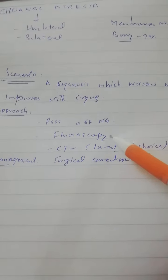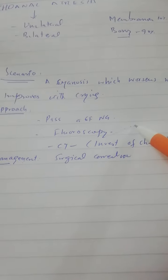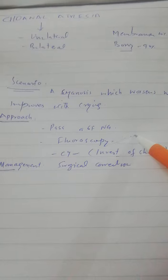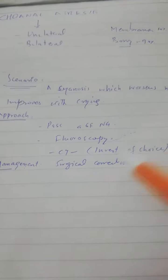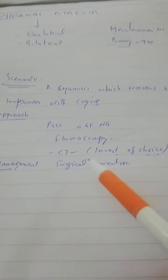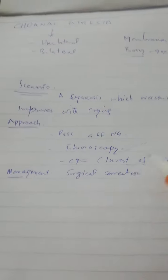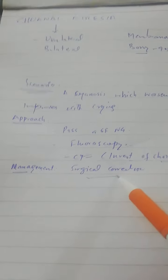Another investigation that can be done: a dye can be injected and fluoroscopy can be done and that can diagnose Choanal Atresia for you. But the investigation of choice is CT and usually we do CT. And the management of choice is surgical correction.